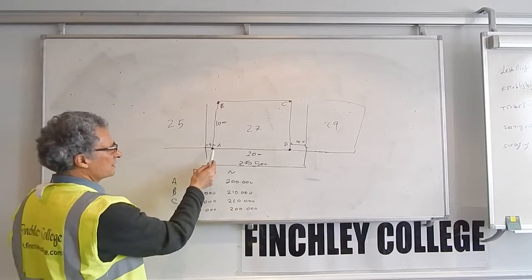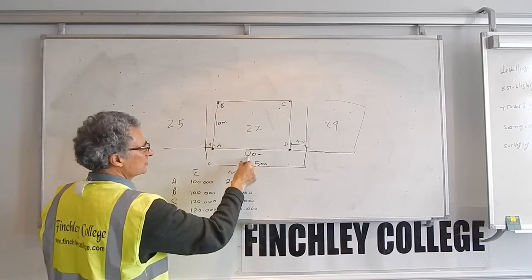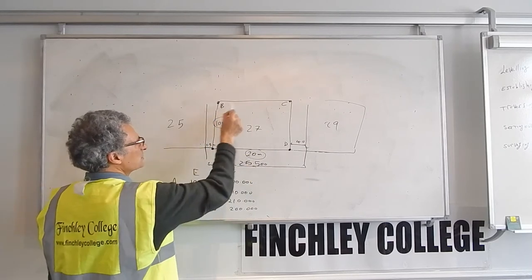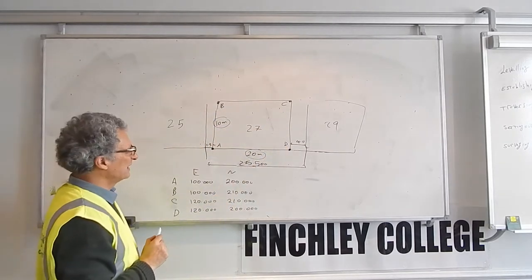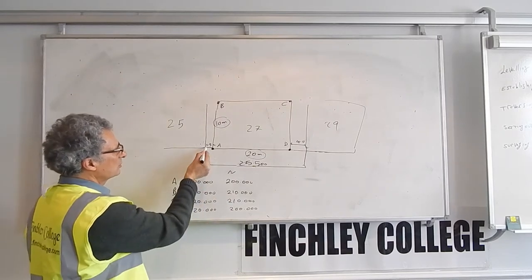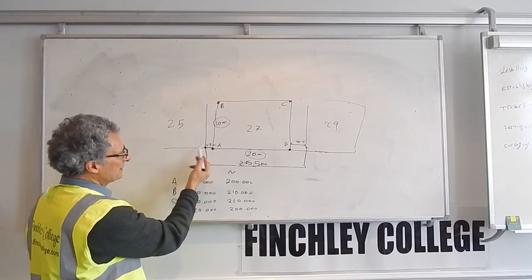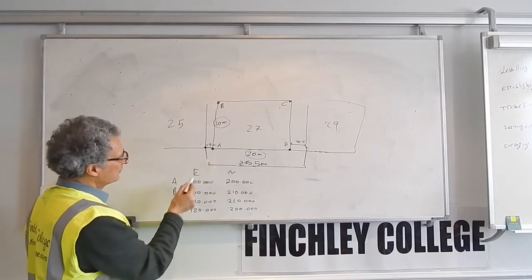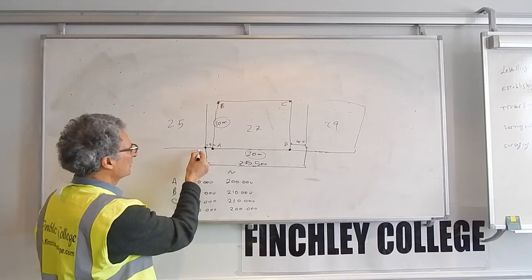So first thing I do, I establish control based on the dimensions of the drawing. I establish a coordinate for the four corners of the building, and I'll write them down here, and then I will work out the coordinate for this corner. This corner, the easting will be 1.5 less, therefore will be 98.5. So if I call this one E and this point here F.